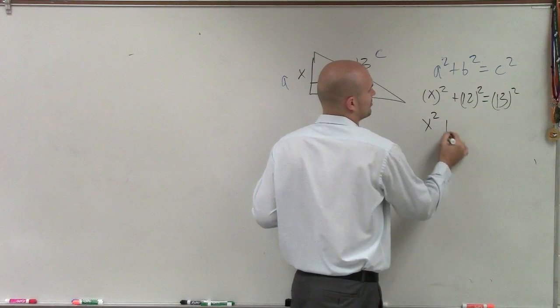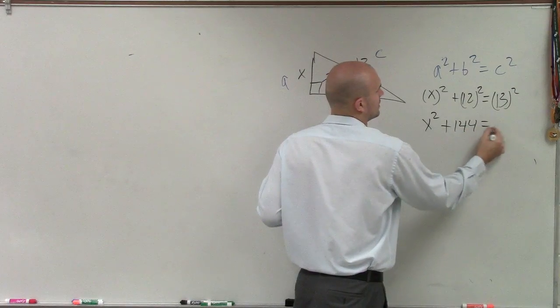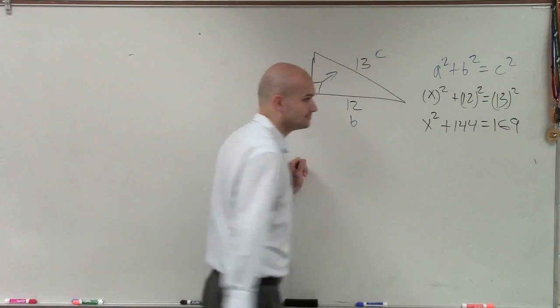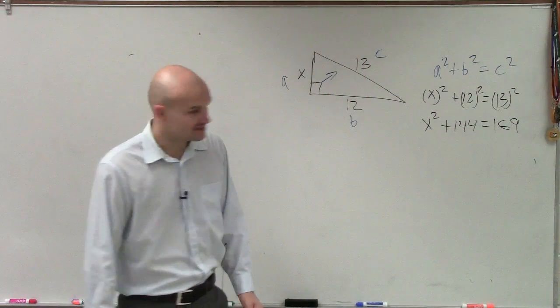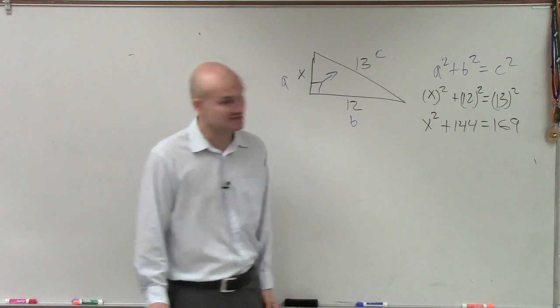So anyways, we just do X squared plus 144 equals 169. It's not because I did the problem before, but I know all those numbers up to 15 squared.